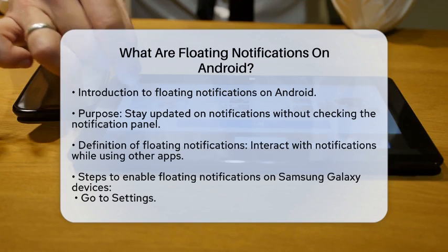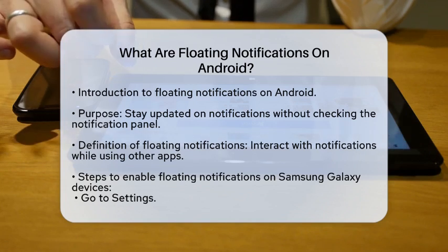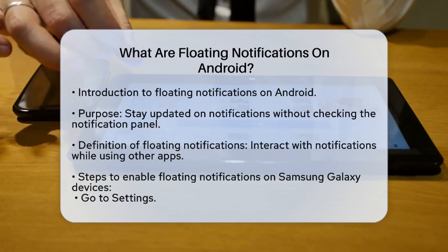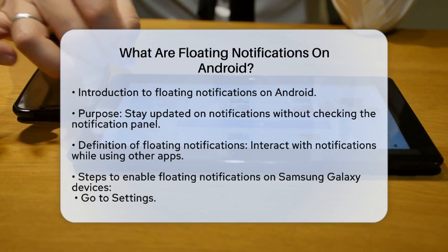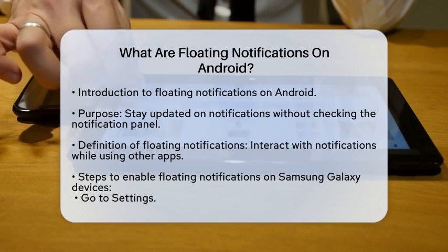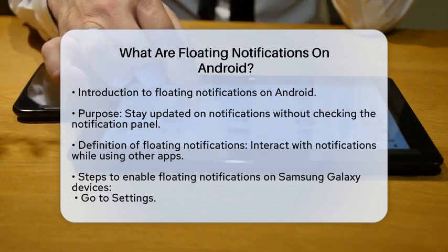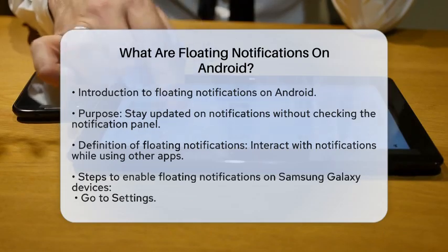you need to go into your settings. First tap on Settings, then select Notifications. From there, go to Advanced Settings and look for Floating Notifications.